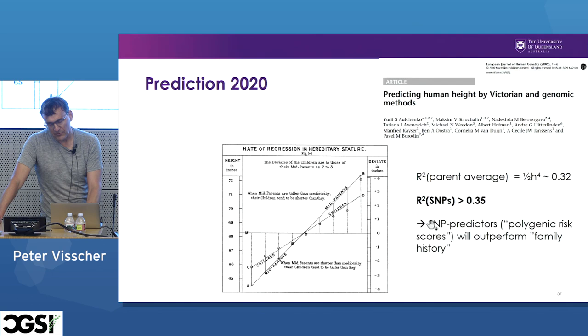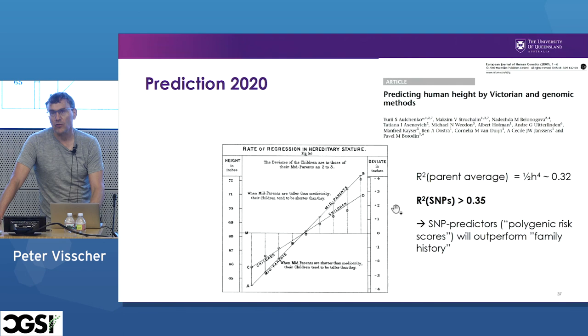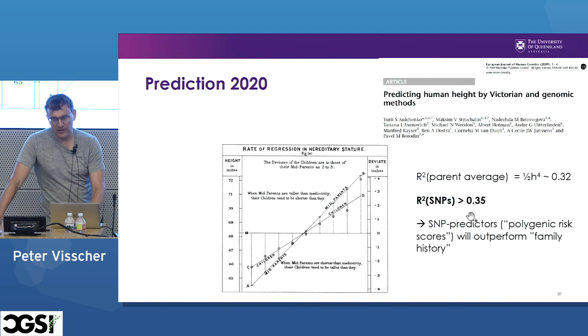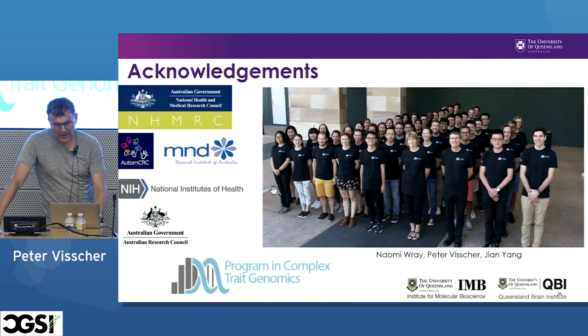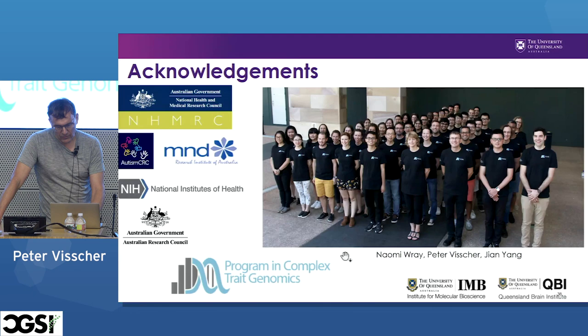It was the idea ten years ago that GWAS doesn't work, and now suddenly everybody's excited about polygenic predictors. It's just because of the increase in sample size — we're getting a much better handle on identifying groups of people at very high risk in the population, or who we predict to be very tall. With that, I'd like to end by thanking our entire group, in particular Naomi and Jian Yang, who co-direct the program in Complex Trait Genomics at the University of Queensland. We'd all like to see you there next year in June. Thank you.